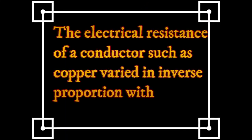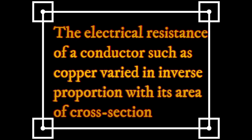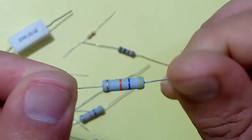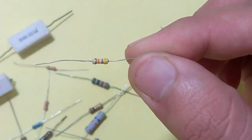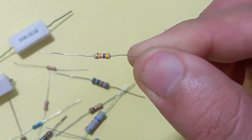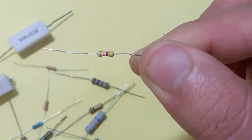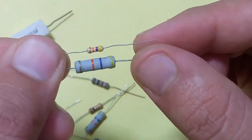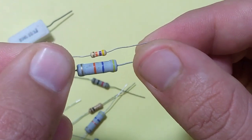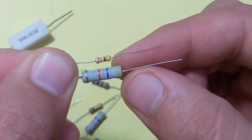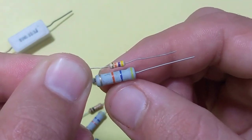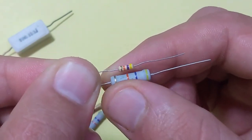Electrical resistance of a conductor such as copper varies in inverse proportion with its area of cross-section. Look at this: this is a 46k ohms resistor of 1 watt. This one is also a 46k ohms resistor but of quarter watt. These look the same as we look at the color code of these resistors. The first band is yellow, the second is violet, the third is orange, and the last one which shows the resistivity of the resistor is also the same.